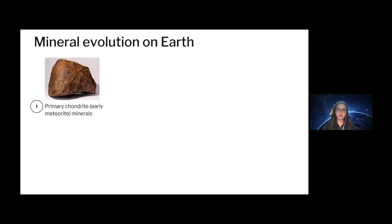On Earth, the mineral evolution includes several stages. The first stage is the formation of primary chondrite minerals, which occurred in the stellar nebula prior to planetary accretion. We found approximately 60 different minerals in these chondritic materials, which represent the starting point of the mineral evolution of all planets and moons in our solar system.